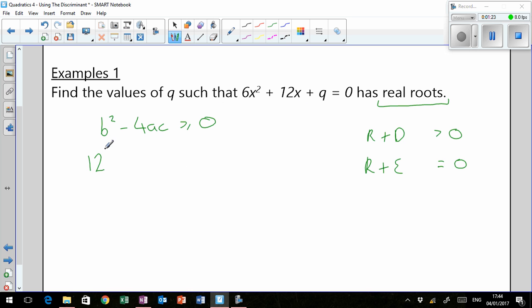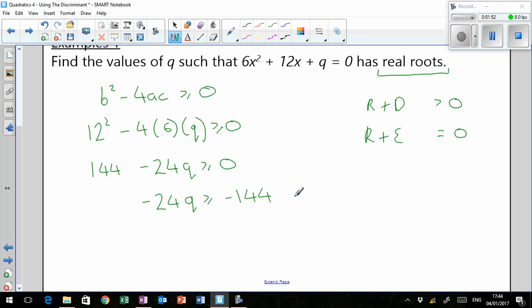So, B is 12, A is 6, and C is just Q. That's going to be 144 take away 24Q is greater than or equal to zero. Which means that minus 24Q is greater than or equal to negative 144. And when you divide by negative 24, because you're dividing by a negative, we know from S5 that that inequality is going to change your sign. And, negative 144 divided by negative 24 is just six.